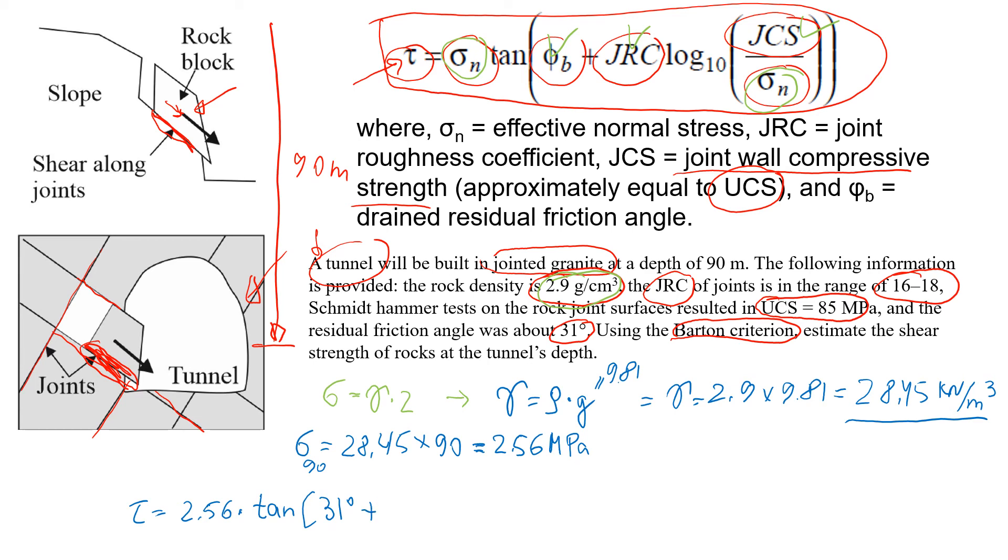Plus - for JRC I have a range from 16 to 18, I'm going to take the average which is 17. And then we have log with base of 10, and this component is JCS which is given as 85.